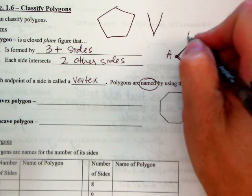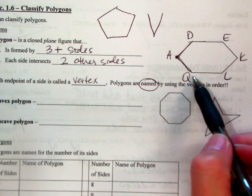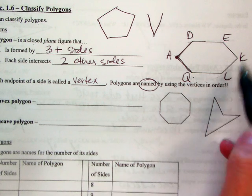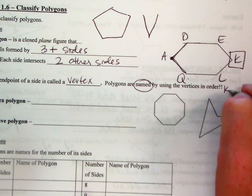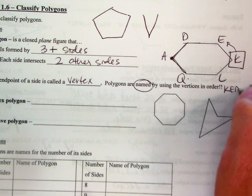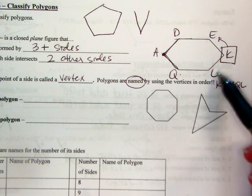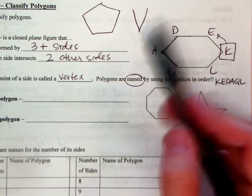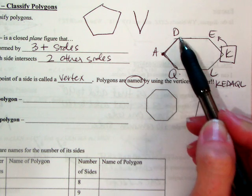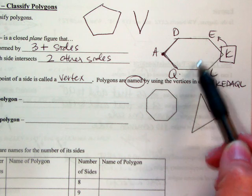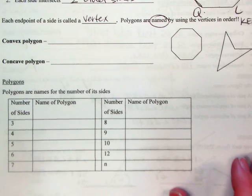We'll throw some letters on here — K, E, D, A, Q, L. It doesn't matter where you start and it doesn't matter which direction you go, but you have to go in order. So starting with K going counterclockwise: K-E-D-A-Q-L. Or going the other way: K-L-Q-A-D-E. What you can't do is skip around — like D-Q-E-A-K-L. Just go in order around the shape.